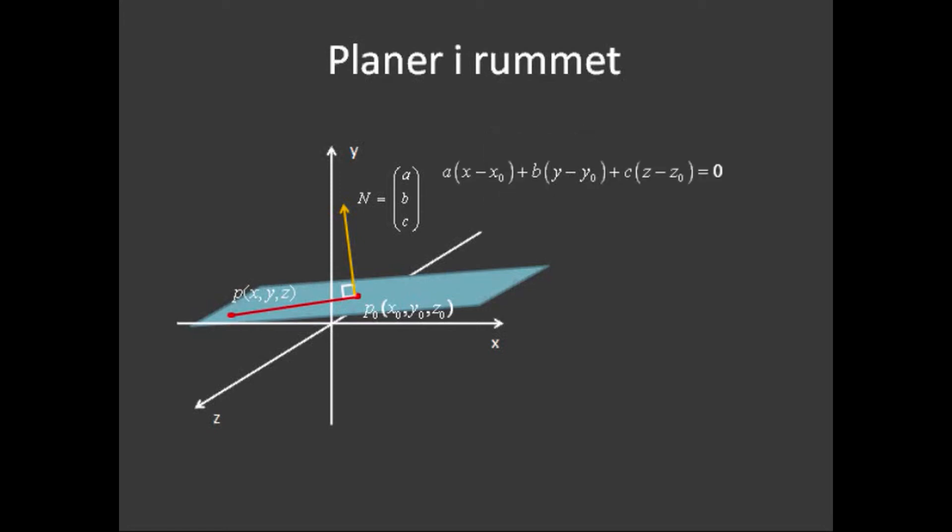Punkter, hvis koordinater ikke ligger på den grønne flade, vil naturligvis ikke passe ind i ligningen, da resultatet af prikproduktet i så fald vil blive forskelligt fra 0. Ligningen kaldes for plansligningen, og læg mærke til, at der her er et ekstra led i forhold til lignens ligning, som vi fandt i en tidligere lektion.